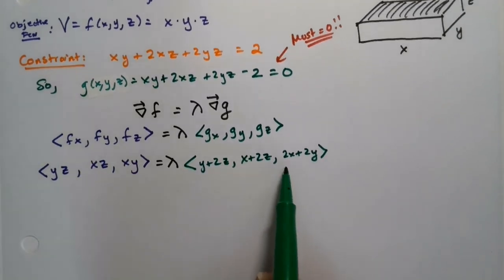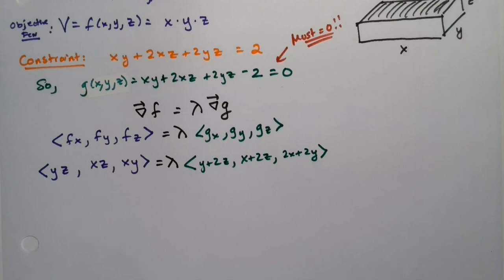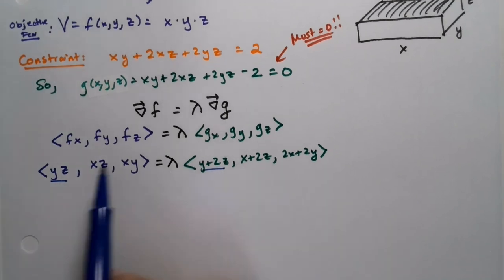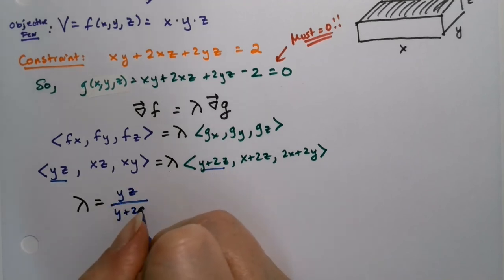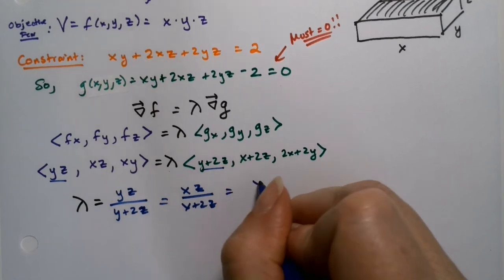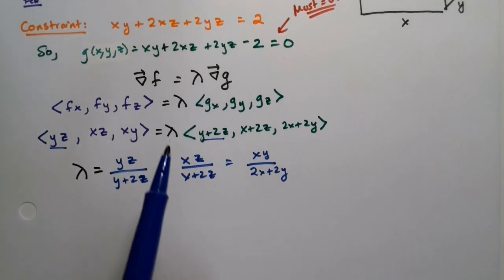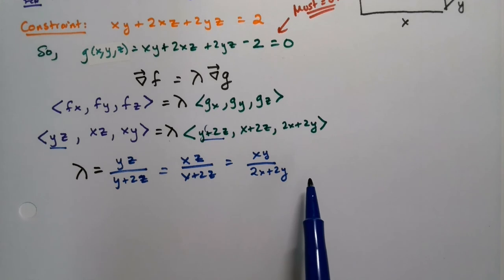So what we do is we set these off into pairs. This first piece is going to be equal to lambda times this piece, and the next piece is going to be lambda times this piece. Or in other words, what you can say is lambda is equal to each of these pieces divided by each other. So lambda is equal to yz divided by y plus 2z. But it's also xz divided by x plus 2z. But it's also xy divided by 2x plus 2y. It is all of those things.